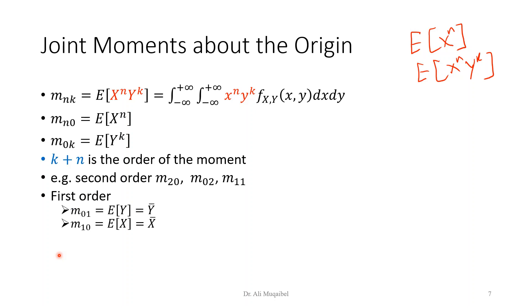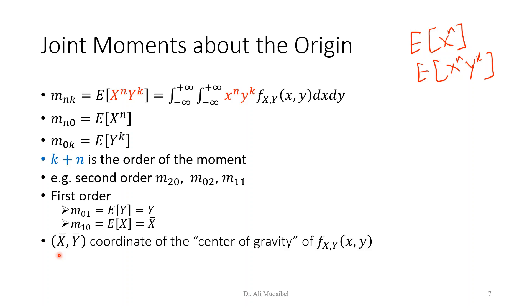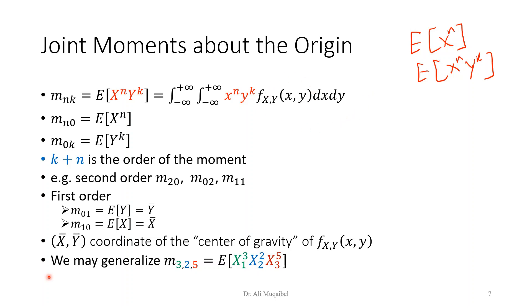For the first-order moment, we have two: m_{0,1} and m_{1,0}, giving the average. If we define the coordinate (x-bar, y-bar), that is called the center of gravity — these are the averages in two dimensions, the centroid. We can also generalize to more than two variables; for example, m_{3,2,5} with three variables means x1^3, x2^2, x3^5 — each variable paired with its corresponding exponent subscript.